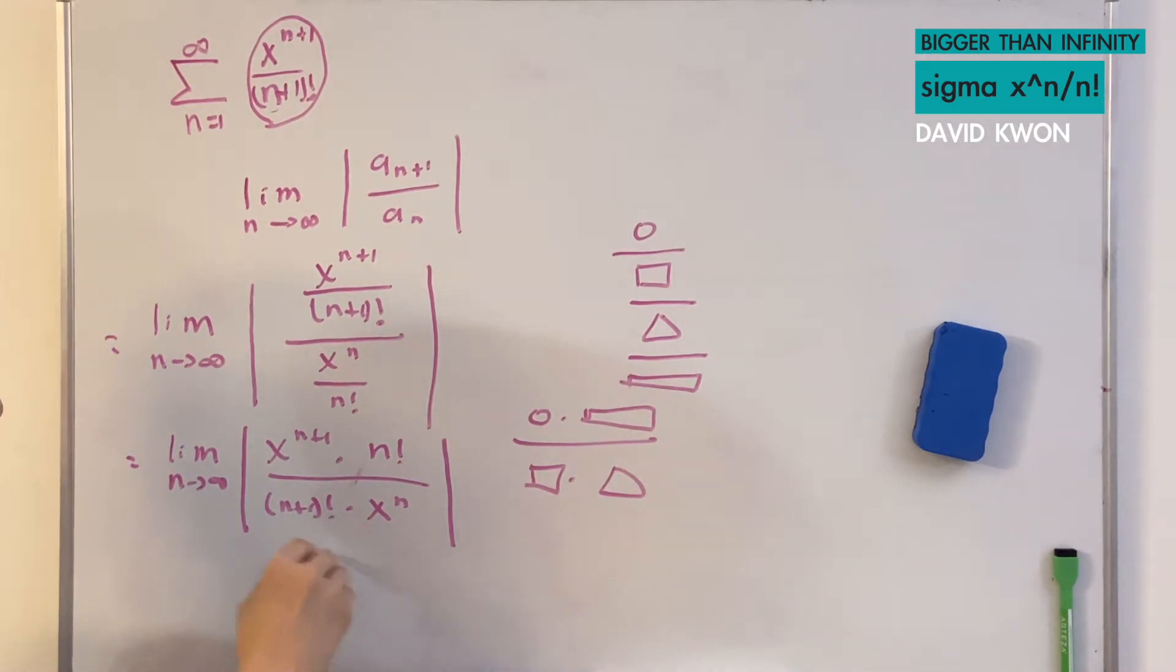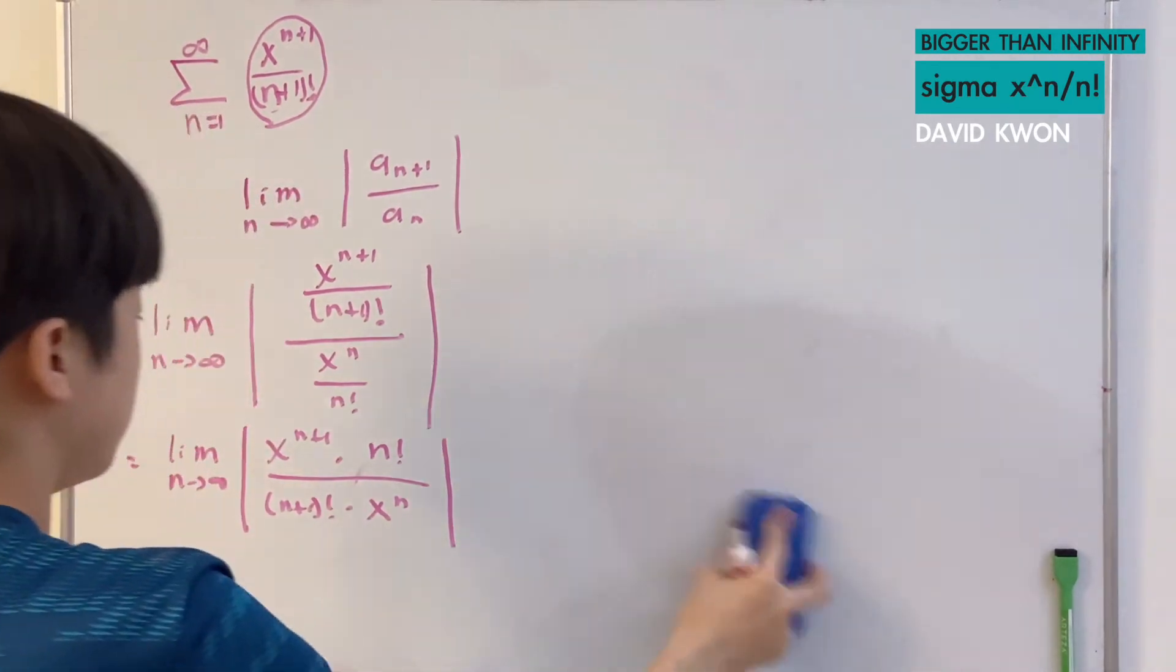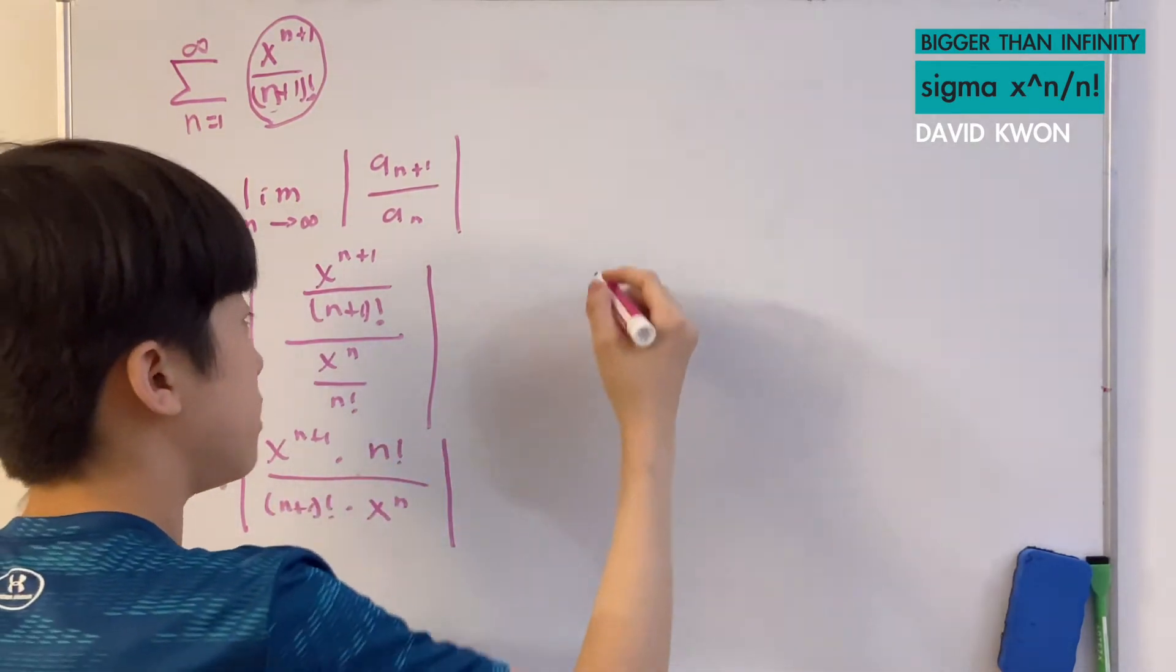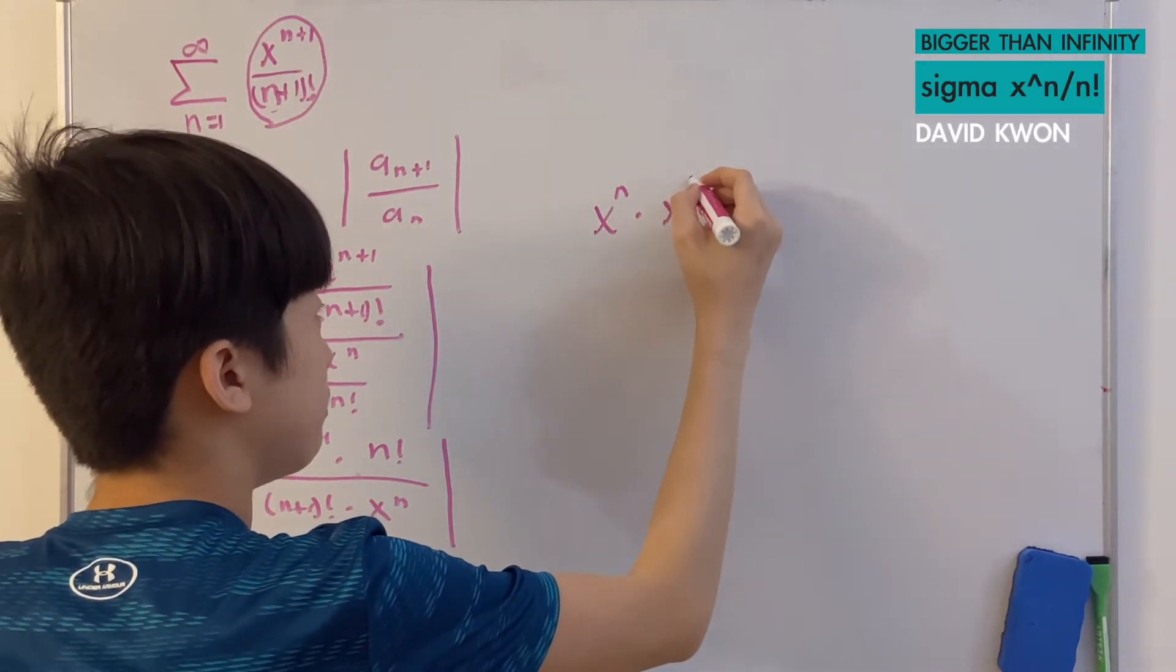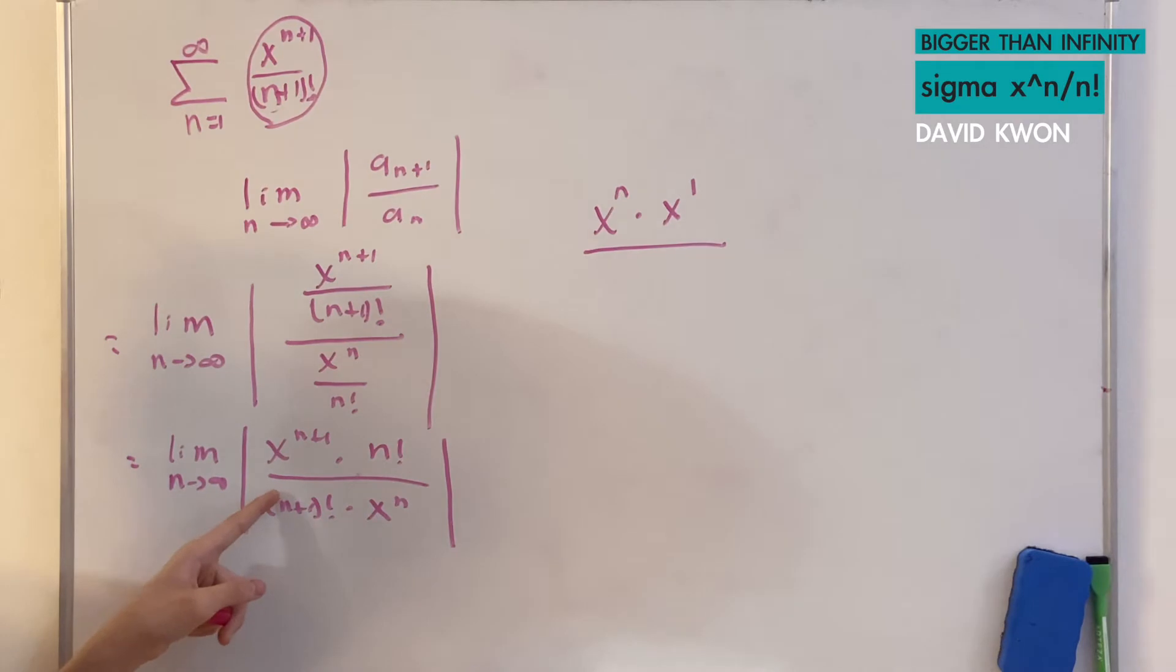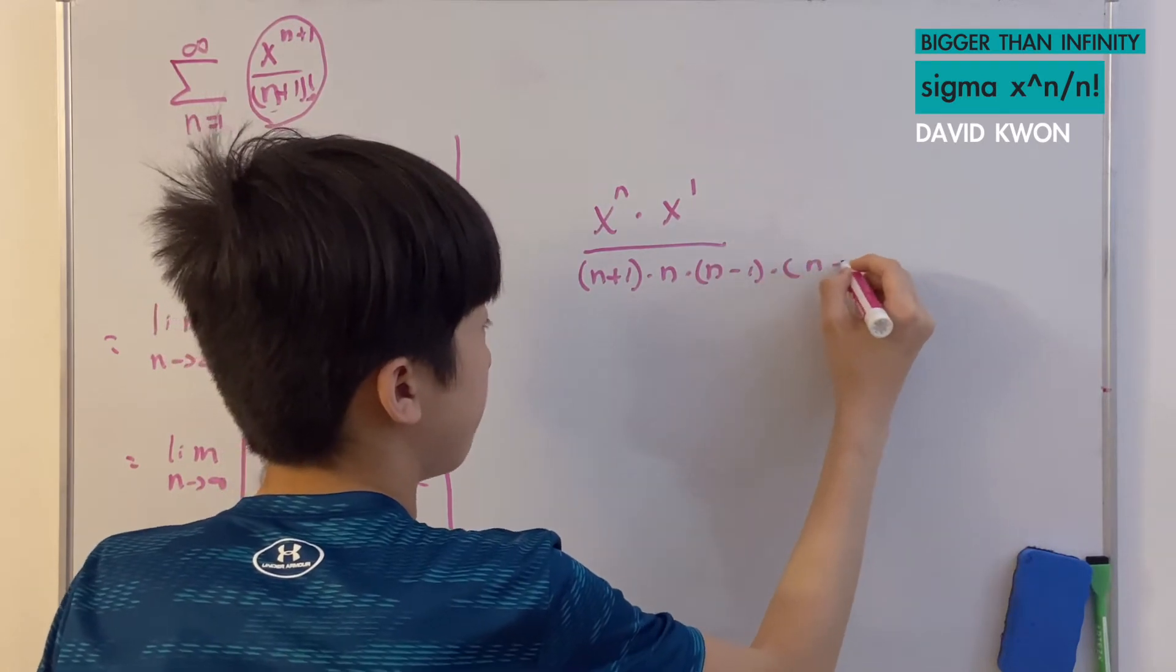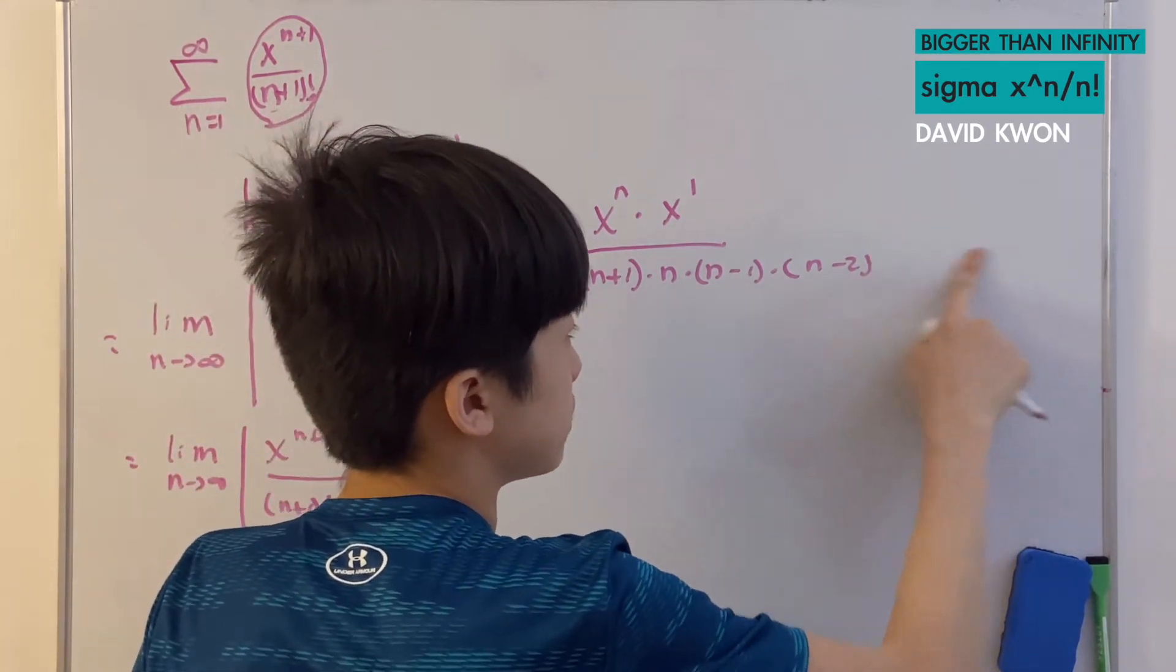I will make this not simplified, so reverse simplified. I will make it more crazy to cancel some stuff out. x to the power of n+1 can be the same thing as x to the power of n times x to the power of 1. And then over (n+1) being parenthesized, and then times factorial. That is just n+1 times n times n-1 times n-2 times n-3. It's already starting to be very long.